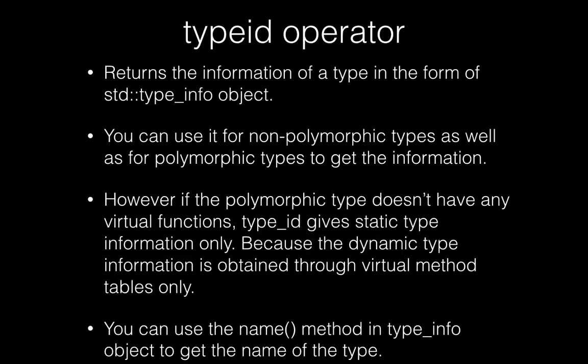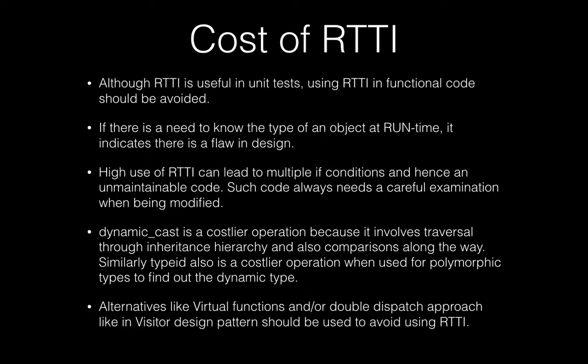Both typeid and dynamic_cast use virtual method tables to find out the dynamic type for a given pointer, reference, or object. You can use the name() method on the type_info object to get the name of the type. These are the two mechanisms used for finding runtime type information.